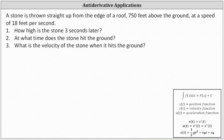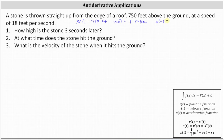Let's begin with the given information. We will let s of t be the position or height function, v of t be the velocity function, and a of t be the acceleration function. Because the stone is thrown straight up from the edge of a roof 750 feet above the ground, the initial height equals 750 feet, so s of zero equals 750 feet. At a speed of 18 feet per second, the initial velocity is 18 feet per second, so v of zero equals 18 feet per second. The only acceleration in this problem is due to gravity, and therefore a of t equals the constant negative 32 feet per second squared.